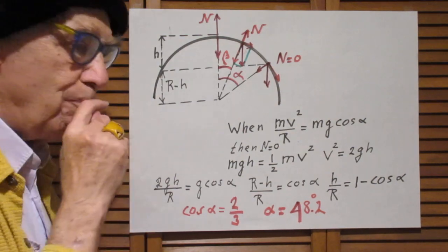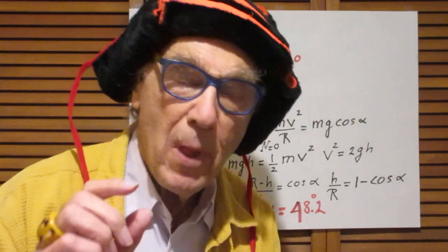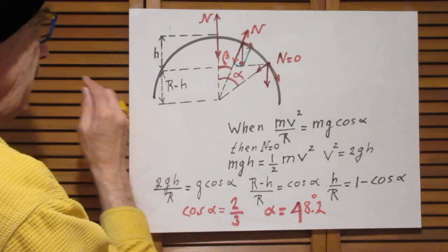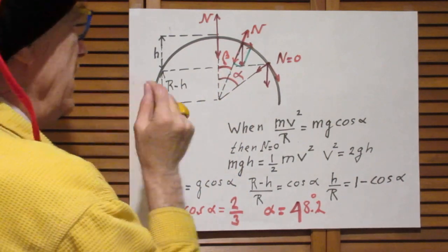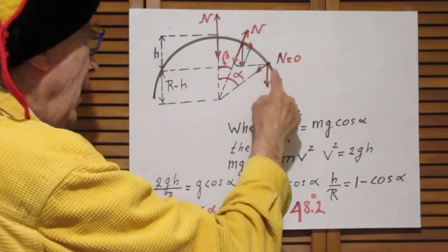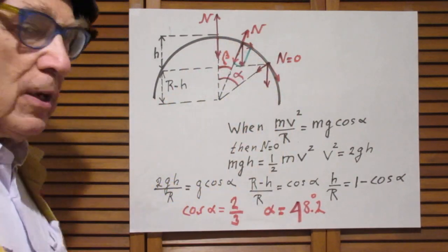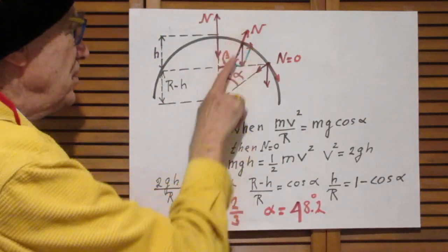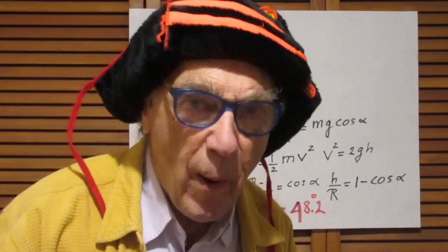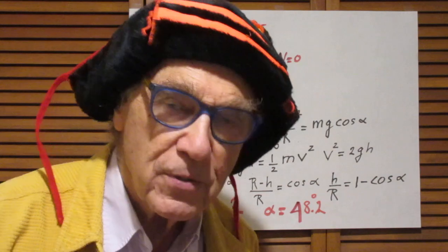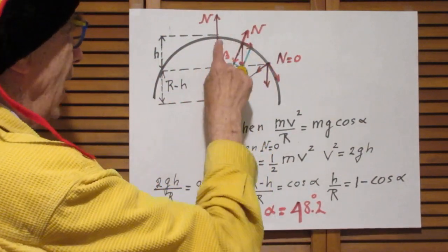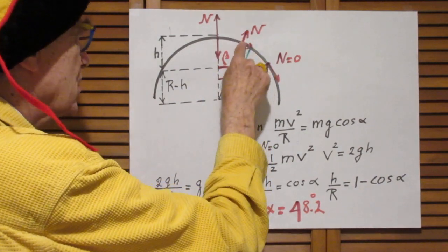And now comes the problem, the key problem. Why is this n smaller than this mg cos beta? The reason is that since this object now has speed and it is going in a circle, so the net force in the radial direction, the net force inwards, must be mv squared divided by r, the centripetal force. And that is only possible if this n, as the speed increases, gets smaller and smaller and smaller.